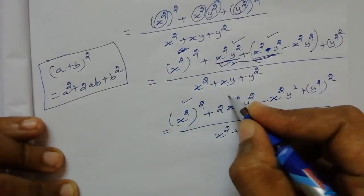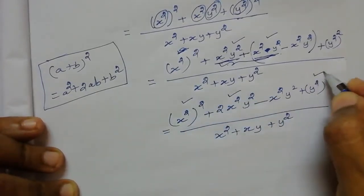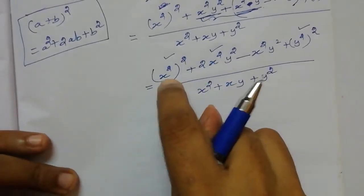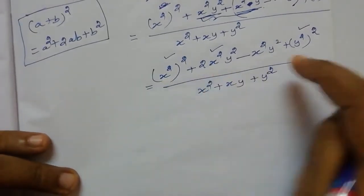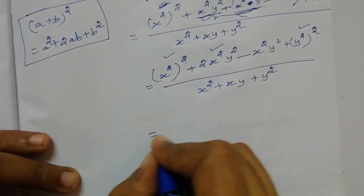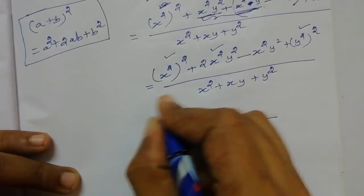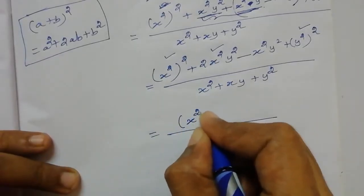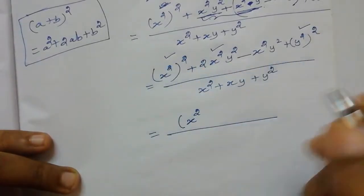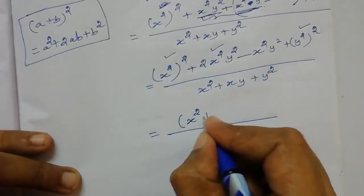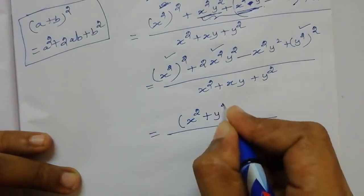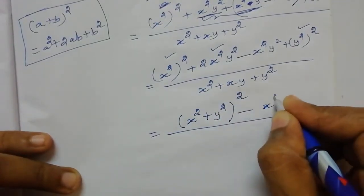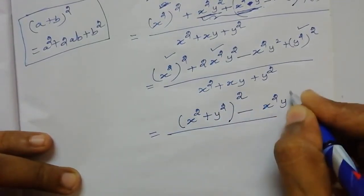Combine the first three terms using the formula a² + 2ab + b² = (a+b)². With a = x² and b = y², we get (x² + y²)² minus x²y², divided by (x² + xy + y²).